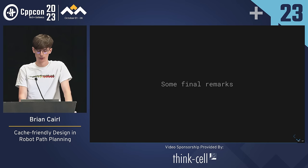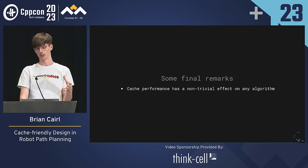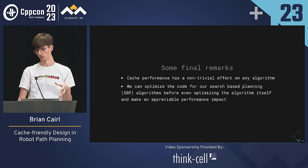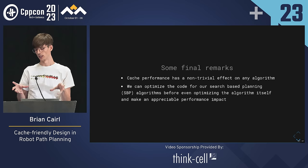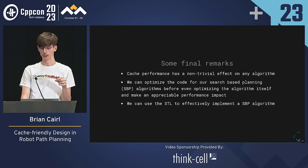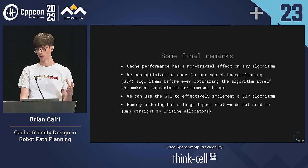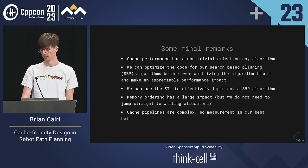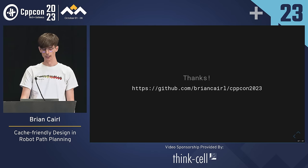To close out with some final remarks: cache performance is performance. Whether it's high-frequency trading or robot path planning, it's all basically the same hardware, so we have to be conscious about memory-sensitive choices. I've shown that we can make a good dent in path planning performance before making any algorithmic changes — before even deciding to go from Dijkstra's to A* or some more exotic implementation, we can make optimizations just in how we represent data behind the scenes. In doing so, we can make ample use of the STL to drive these implementations, and use it pretty effectively before considering custom allocation strategies. Lastly, our hardware is complex and ever-changing, our cache pipelines are complex — measurement is your best bet for guiding these optimizations. Thanks. I have a link to the GitHub containing all the code I used for measurement.